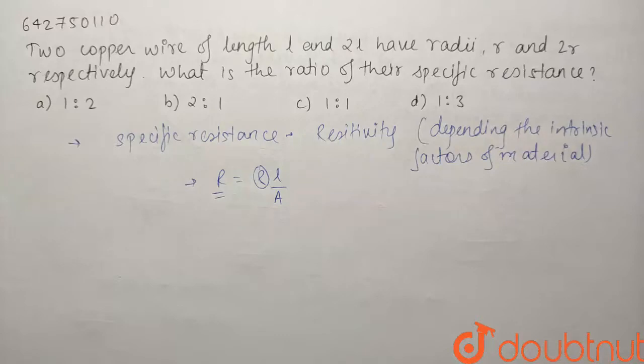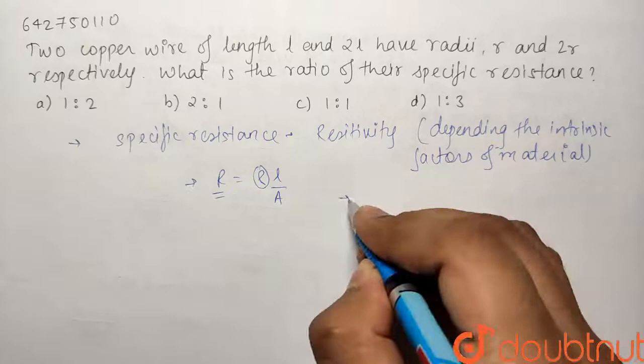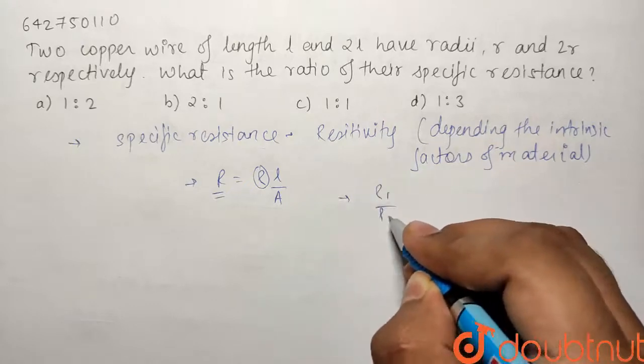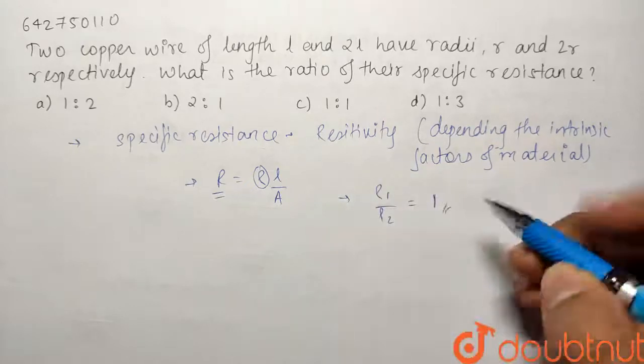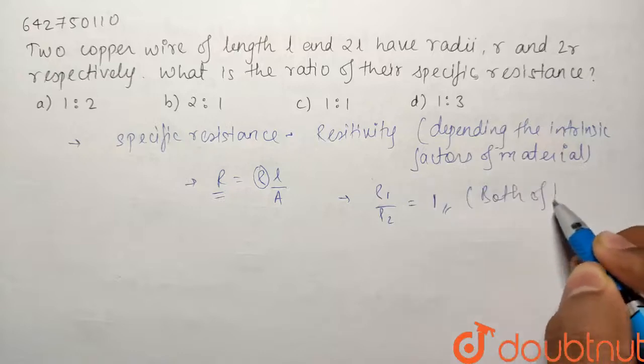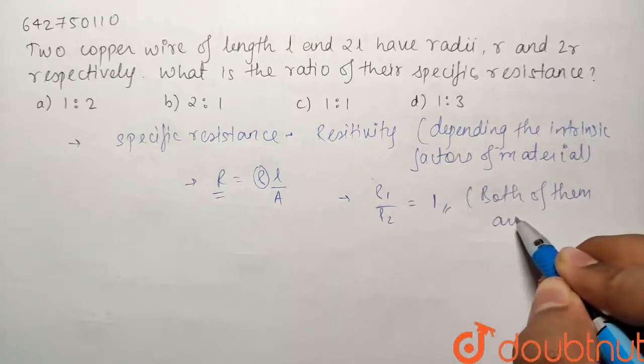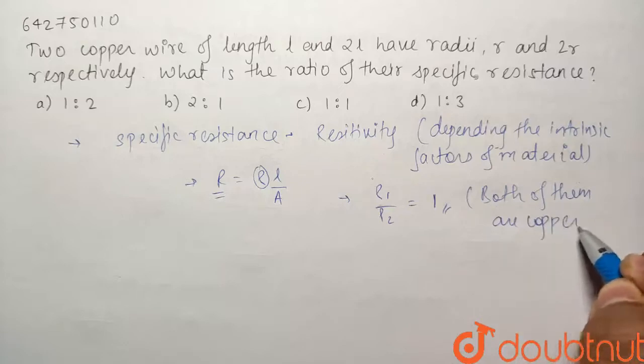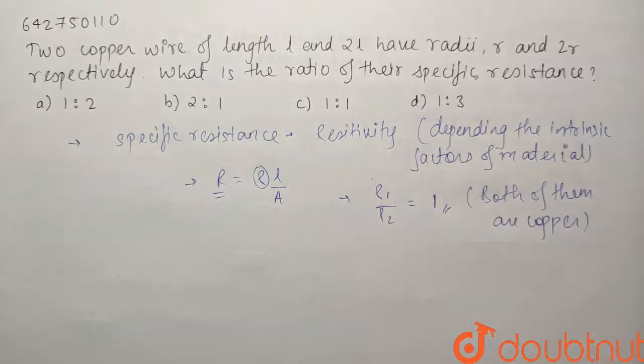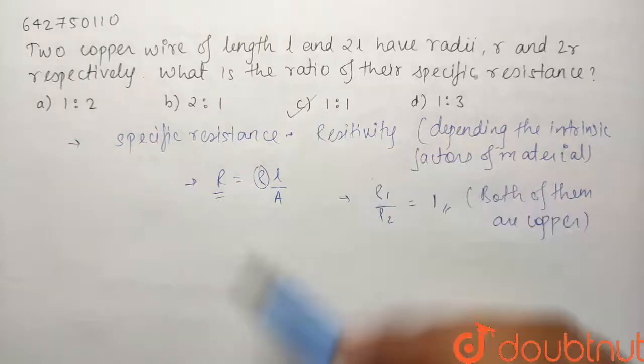So, as in the question we have been clearly given that we are using two copper wires, and as both of the wires are made of copper, their Rho has to be same. So as their Rho is same, the ratio of the specific resistance, that is Rho 1 by Rho 2, will be equal to 1 because both of them are copper. So the ratio of the specific resistance has to be equal to 1, and our correct answer will be answer C. Thank you.